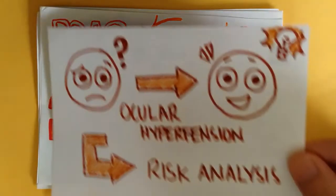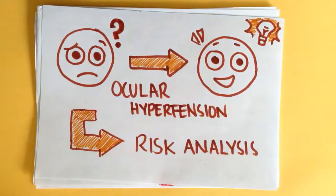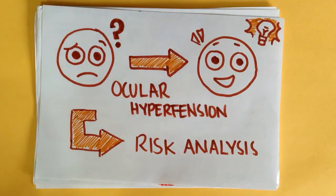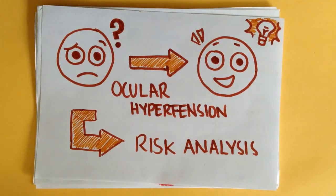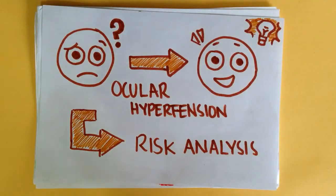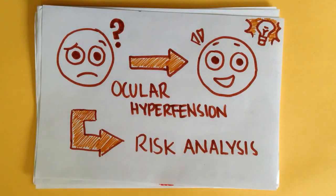By this point, if all your testing is coming out normal and you're quite confused, then you need to consider ocular hypertension. You still need to do a risk analysis in this case because the pressure may still need to be reduced. One last quick note: if the IOP is any higher than 30 millimeters of mercury, this patient needs to be treated as they have a risk of central retinal vein occlusion.